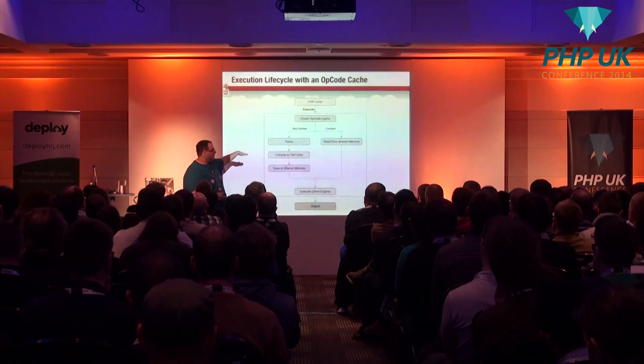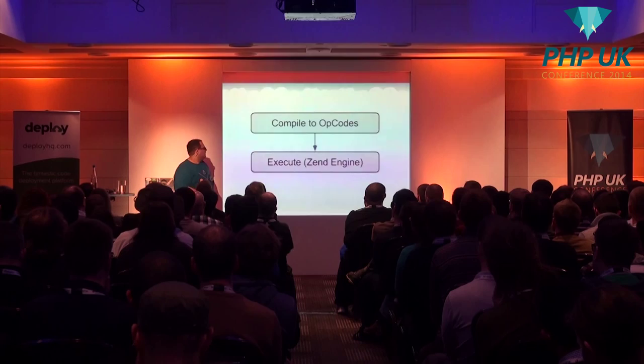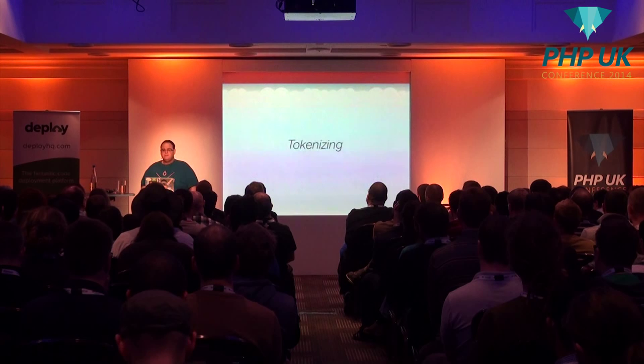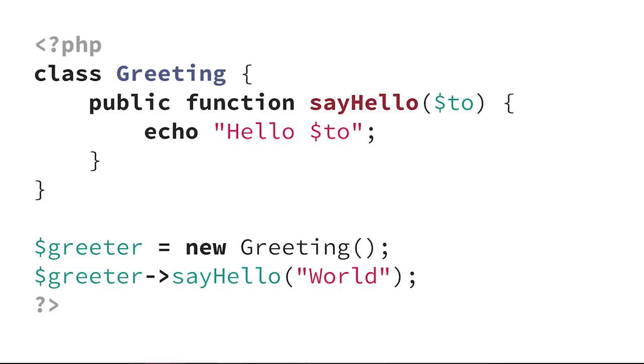Today we're going to look at the compiling to opcodes and the execution. The first thing that happens is tokenizing, and we're going to look at what I call the worst hello world ever. If you could over-engineer a hello world, this would be it.